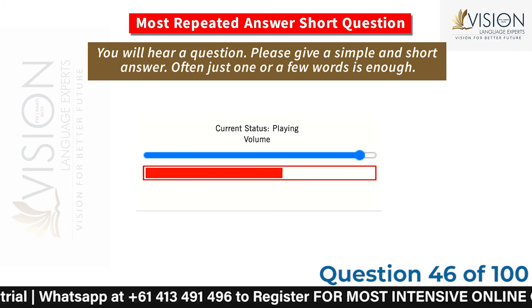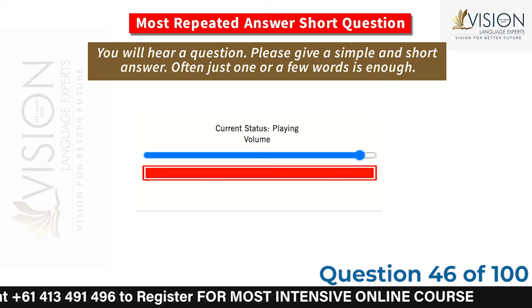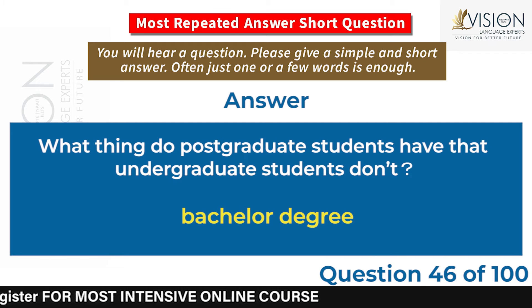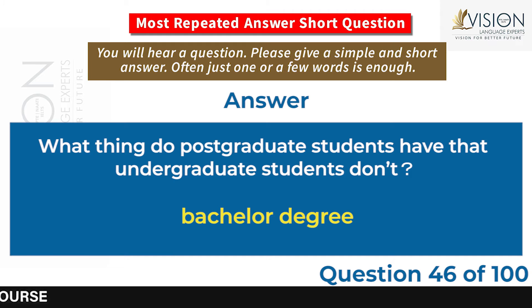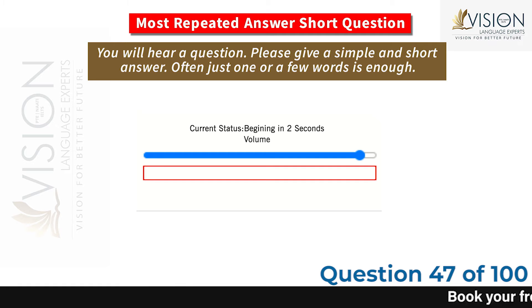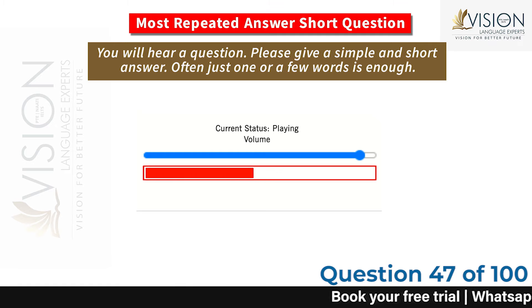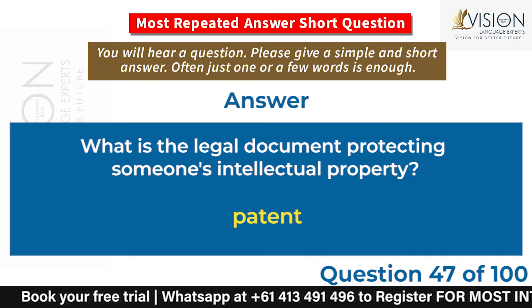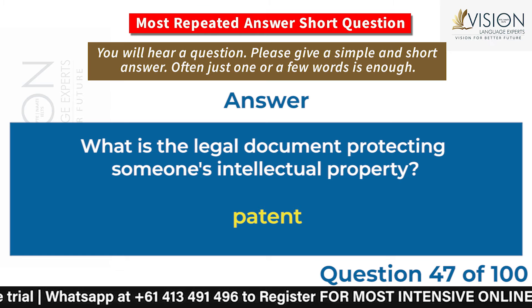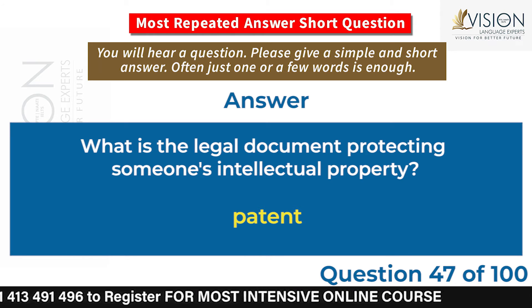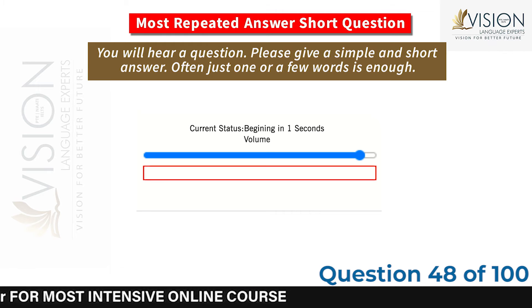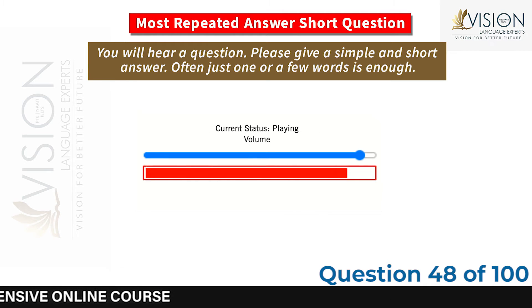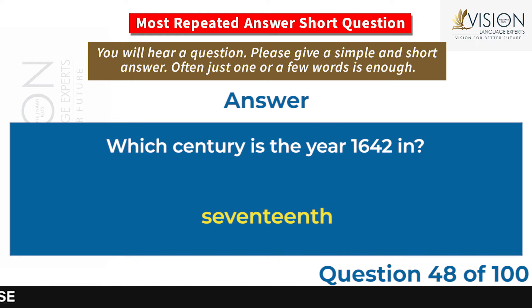What thing do postgraduate students have that undergraduate students don't? A bachelor's degree. What is the legal document protecting someone's intellectual property? Patent. Which century is the year 1642 in? The 17th century.